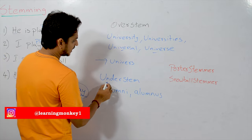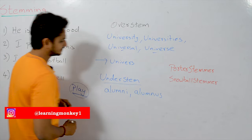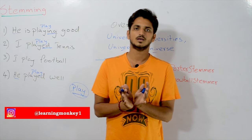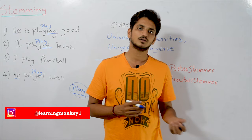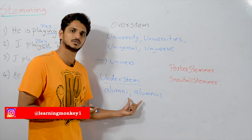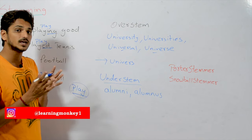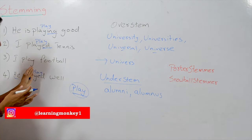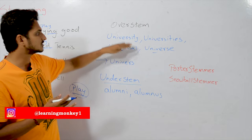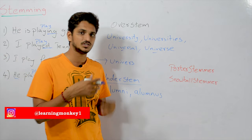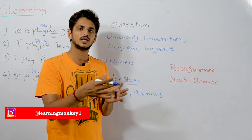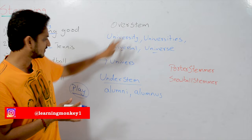The second problem is understemming. Consider 'alumni' and 'alumnus' — they are actually from the same stem, but in our stemming algorithm these two are considered as different stems. These problems occur because the algorithm works purely on suffix/prefix conditions. When they try to modify conditions to fix these problems, they introduce other problems in different situations, so they did their best to give us reasonable stem words.